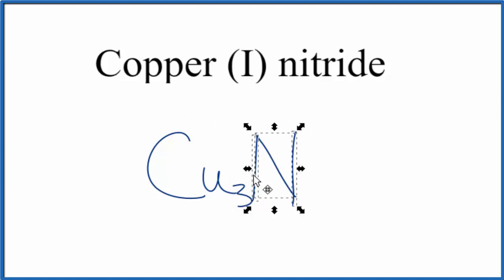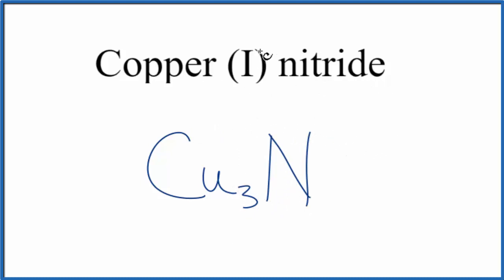Let's check our work on this. We said we had copper(I), so +1, and nitrogen, -3. We have 1 × (-3) = -3 here, and 3 × (+1) = +3. These two numbers add up to zero, so this is the formula for copper(I) nitride.